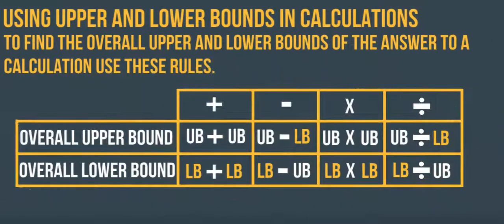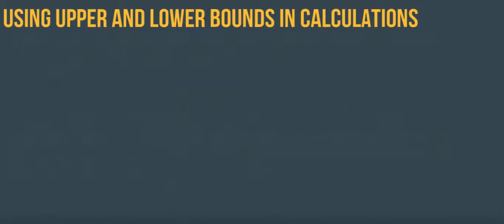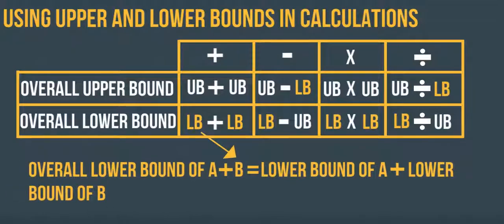To find the overall upper and lower bounds of the answer to a calculation, use these rules. The overall lower bound of A plus B is equal to lower bound of A plus lower bound of B.